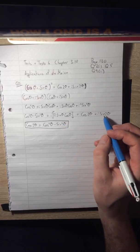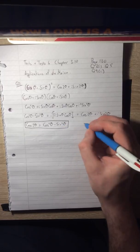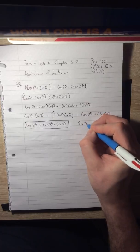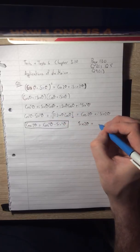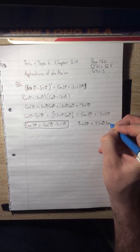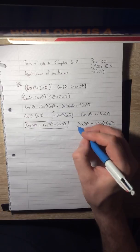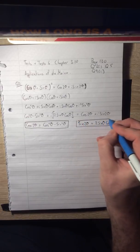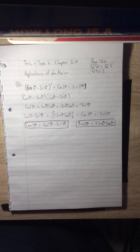And we also get that sin 2θ, which is what they're looking for in this question, is 2 sin θ cos θ. So there's your answer to two, part one.